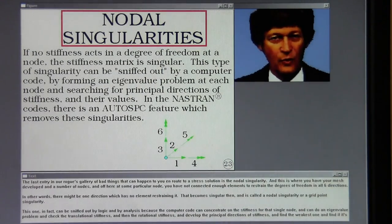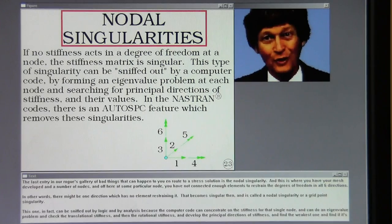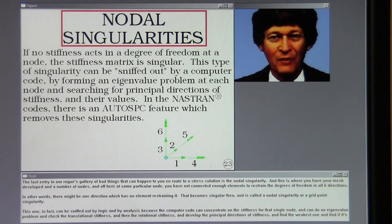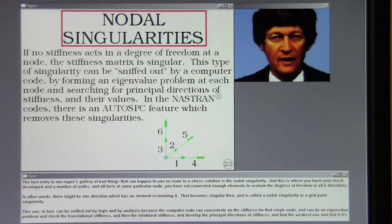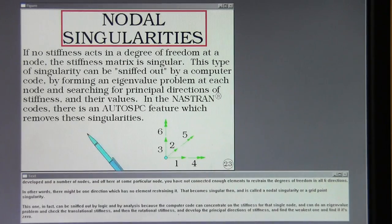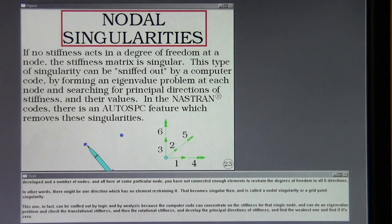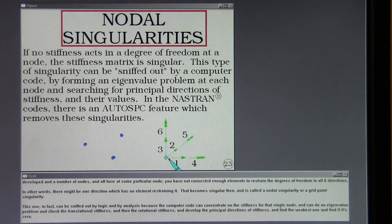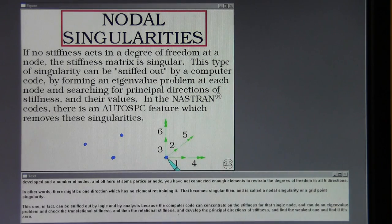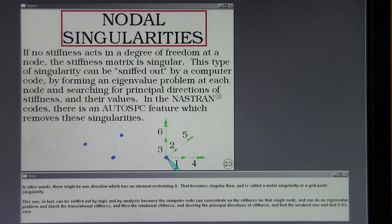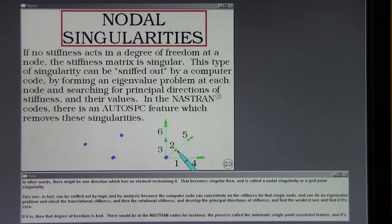The last entry in our rogue's gallery of bad things that can happen to you in route to a stress solution is the nodal singularity. And this is where you have your mesh developed and a number of nodes. And off here at some particular node, you have not connected enough elements to restrain the degrees of freedom in all six directions. In other words, there might be one direction which has no element restraining it. That becomes singular then. And it's called a nodal singularity or a grid point singularity.